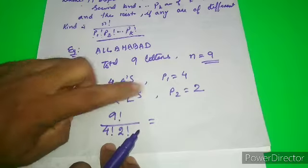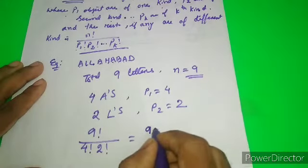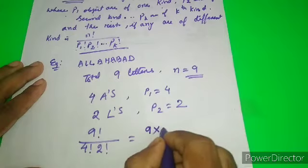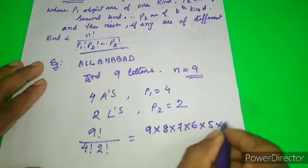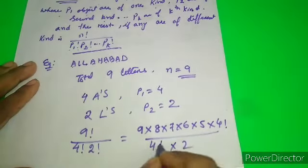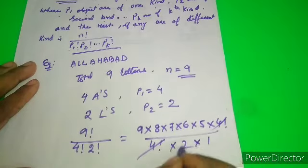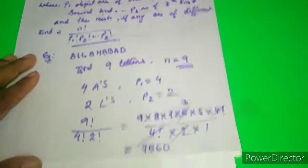Now if you calculate: 9 times 8 times 7 times 6 times 5, with 4 factorial in the denominator, and 2 factorial, canceling terms, we get 7560.